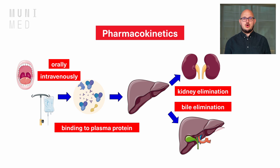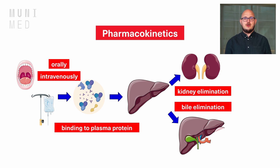Therefore, patients with lower albumin levels have a higher fraction of free drug and potentially a higher incidence of toxicity. Etoposide is mainly metabolized by the liver to less active compounds. It is excreted in urine, but a small portion of metabolites are excreted in stool via hepatobiliary excretion.